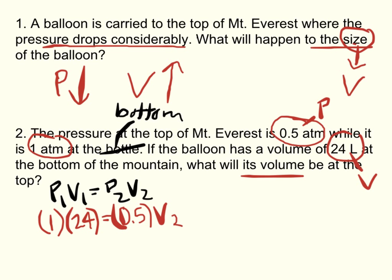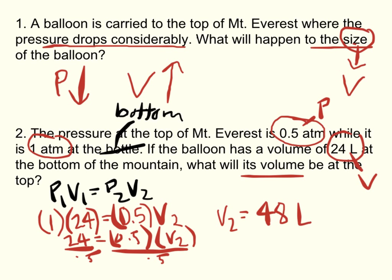So, the way to solve this, we've got to get V2 by itself. 24 times 1 is 24, equals 0.5 times V2. Divide by 0.5 on both sides. 24 divided by 0.5 gives you a final answer, V2 equals 48 liters.